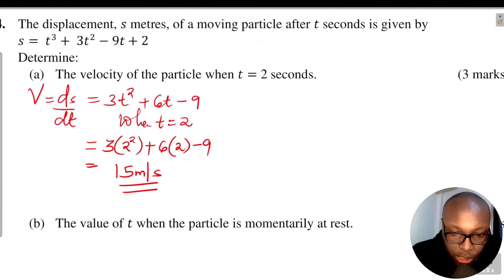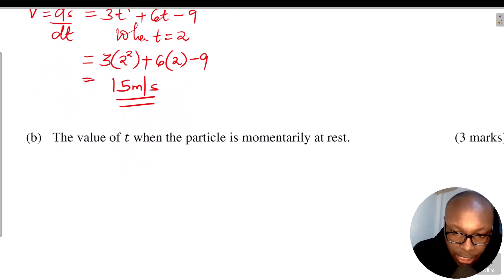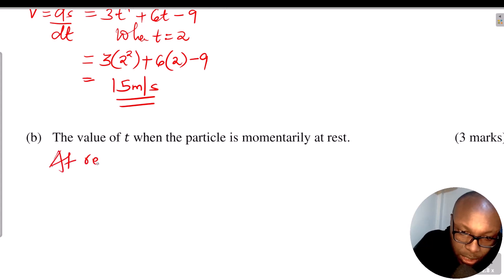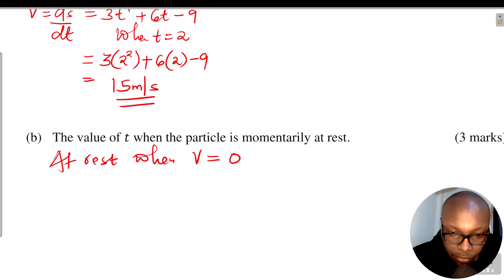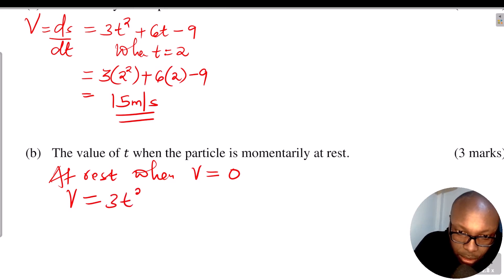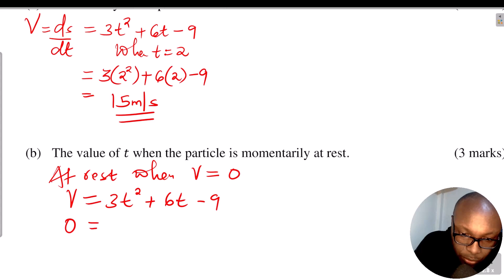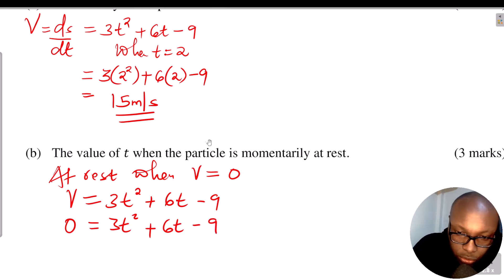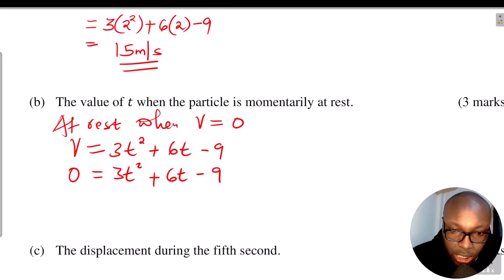Part B: find the value of t when the particle is momentarily at rest. The particle is momentarily at rest when velocity equals 0. So we take the expression for velocity from part A, which is v = 3t² + 6t - 9, and substitute v with 0. So 0 = 3t² + 6t - 9. Once we solve this quadratic equation, we will get the value of t.